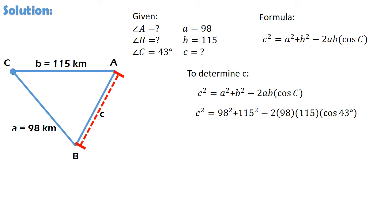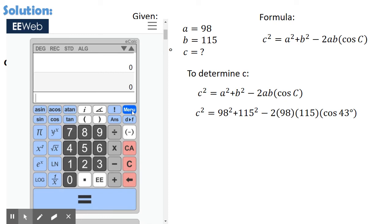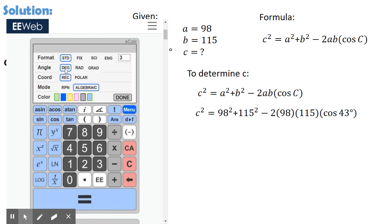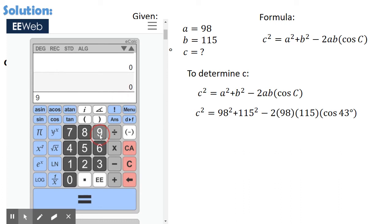Mula dito, pwede na natin gamitin ang scientific calculator para makuha ang value ng c squared. Siguraduhin lang muna natin na nakadegree mode ang ating scientific calculator. And then, we can input the numbers. May ibang scientific calculator na kailangan gamitan ng grouping symbol na open and close parentheses. Kaya importante na alam nyo kung paano yung paraan ang pagsosolve ng iyong scientific calculator. May iba naman na hindi na kailangan, depende sa brand at sa model.